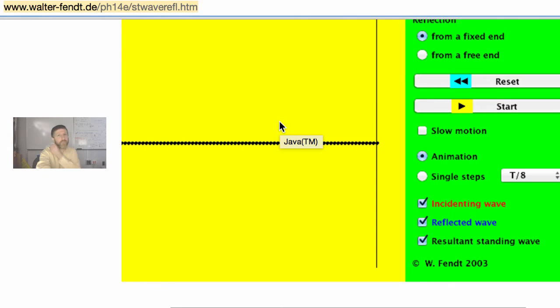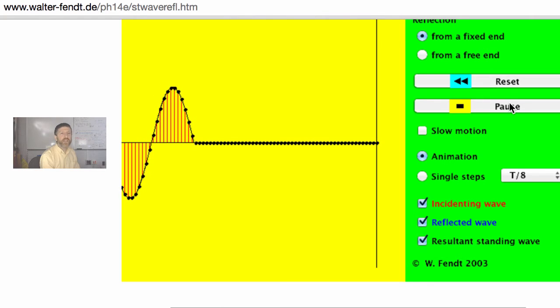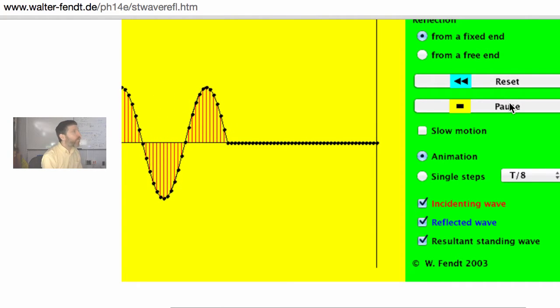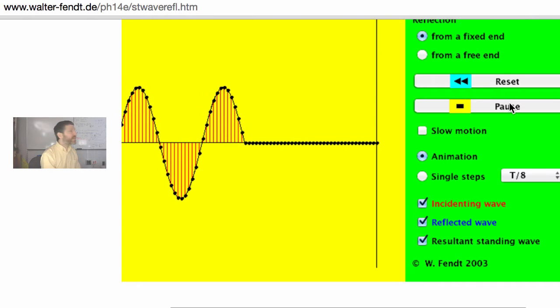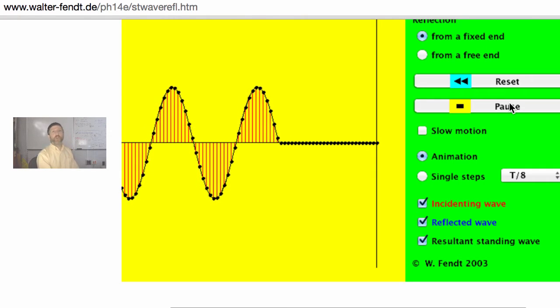This demo right here is a fantastic demonstration that will help us understand what's going on. I'm going to start this—this is simply a wave on a spring that is heading towards a wall where it's attached. What's going to happen is it is going to reflect. When a wave reflects from a fixed point, what does it do? It inverts.